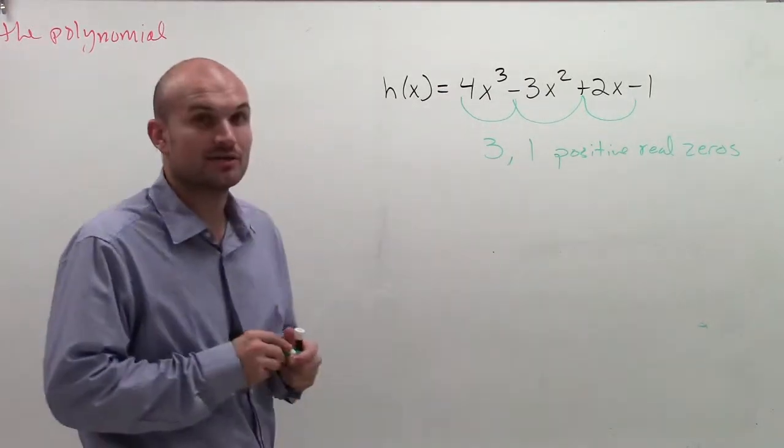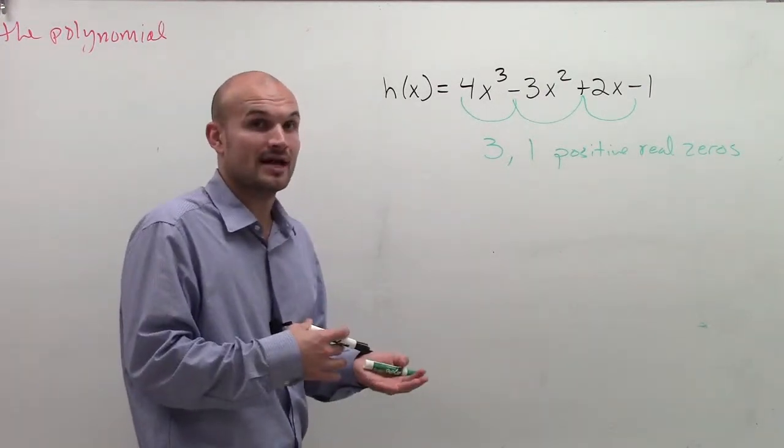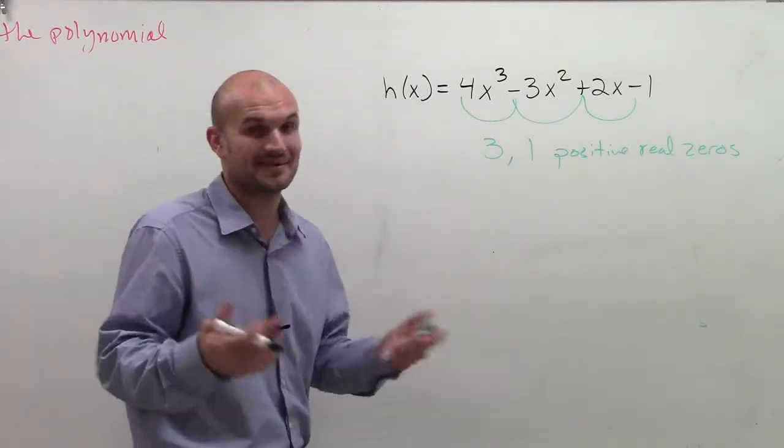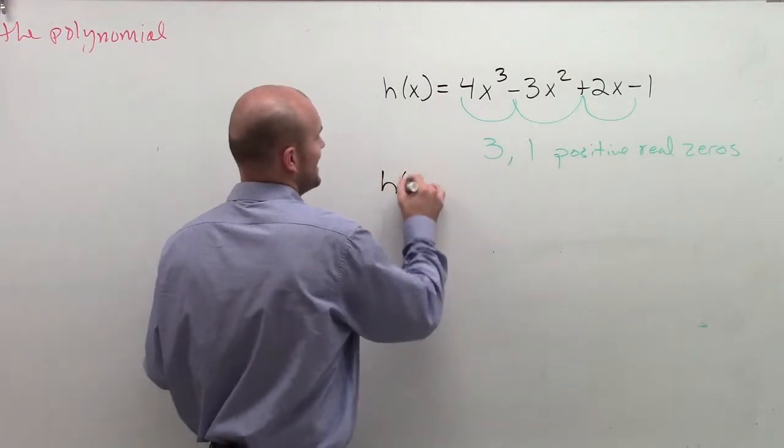So the next test I want to do is how about the negative, right? So I'm either going to have zero negative or I'm going to have two negatives. So let's take a look at this. To find the negatives, I'm going to now evaluate h of negative x.